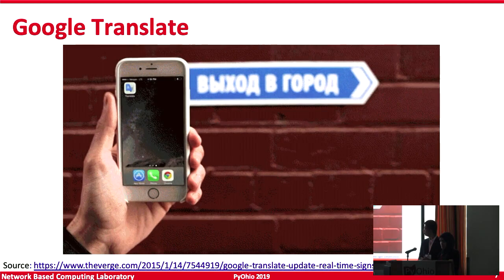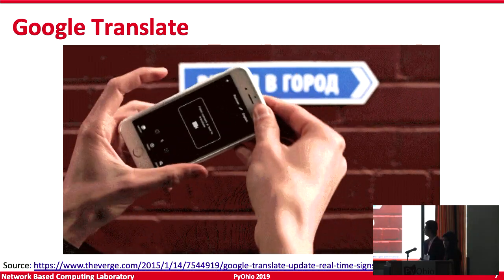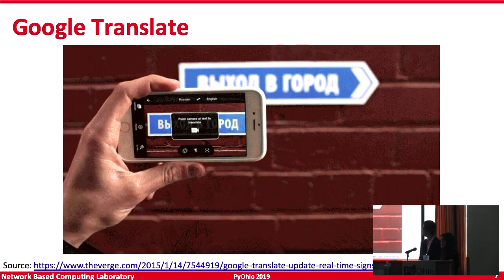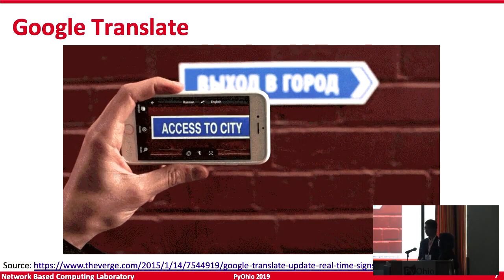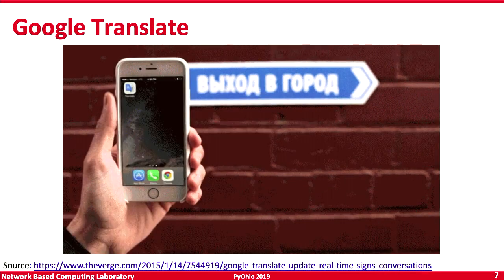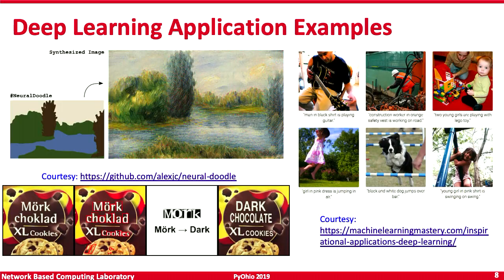Natural language processing is the interaction of computers and human languages — language translation, language understanding, summarizing text. For example, Google Translate can take an image of something in a different language and convert it to English. You can also convert a doodle to a professional painting, detect text in another language and convert just the text while maintaining the original image, and there's also caption generation where, based on what's in a picture, it develops a caption.